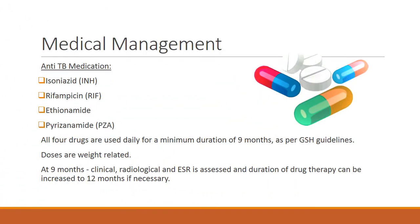Medical management is the mainstay of management for TB of the spine. As per guidelines, four drugs are used for a duration of nine months, namely isoniazid, rifampicin, ethambutol and pyrazinamide. The doses of these drugs are weight related. A clinical, radiological and ESR assessment is carried out at nine months, and the duration of drug therapy can be later increased to 12 months if necessary.